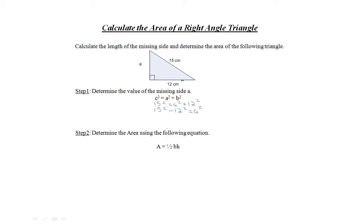15 squared is 225, 12 squared is 144, which equals A squared. 225 minus 144 equals 81.